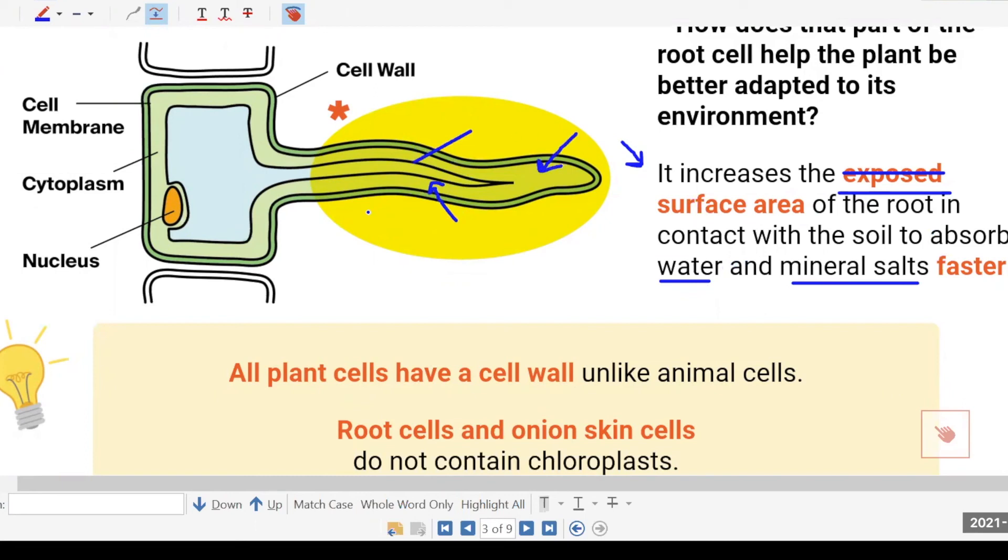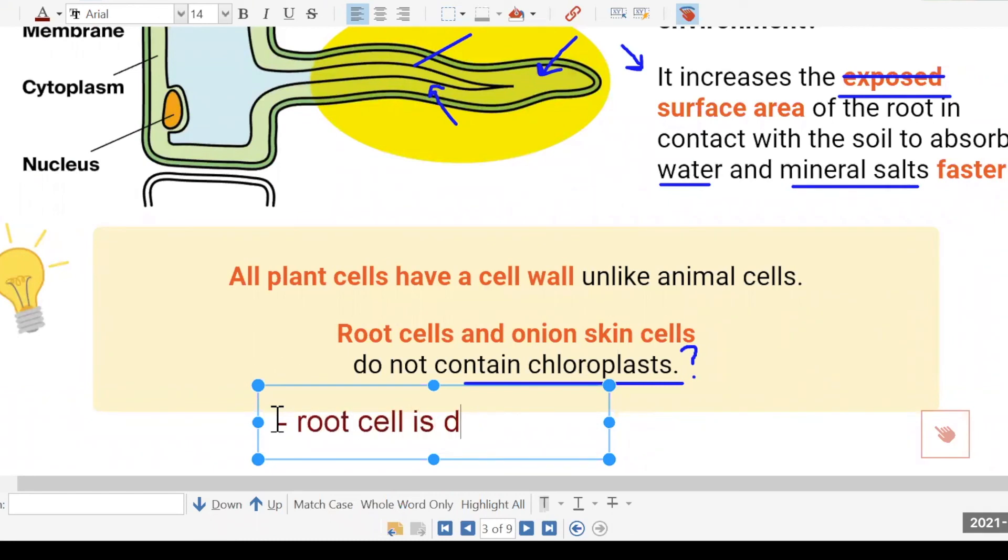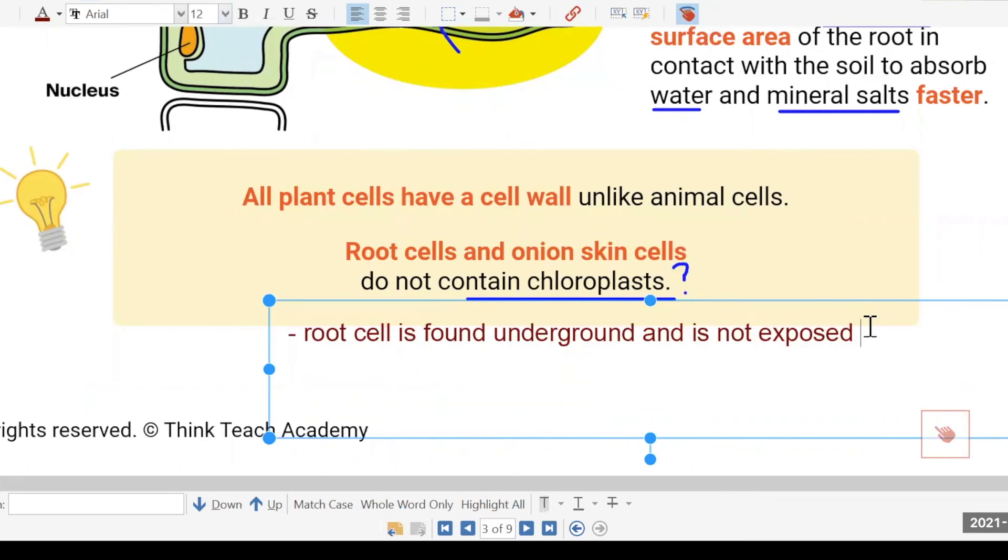So why do root cells not have any chloroplasts? It's underground and has no contact with the sunlight at all. Very good. So when you're answering such questions, why no chloroplasts, you have to tell me that the root cell is found underground and is not exposed to sunlight for photosynthesis to make its own food. So you must tell me the root cell is found underground, not exposed to sunlight for photosynthesis to make its own food. That is the reason why it has no chloroplasts.